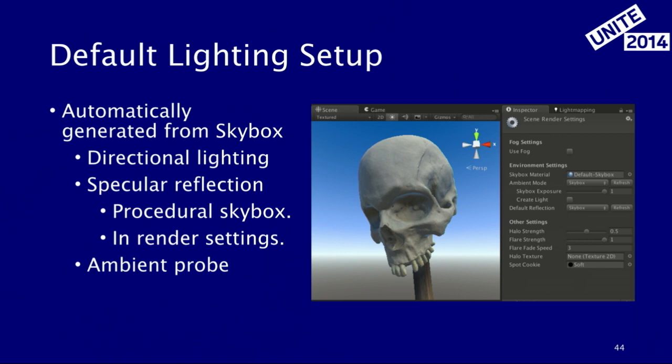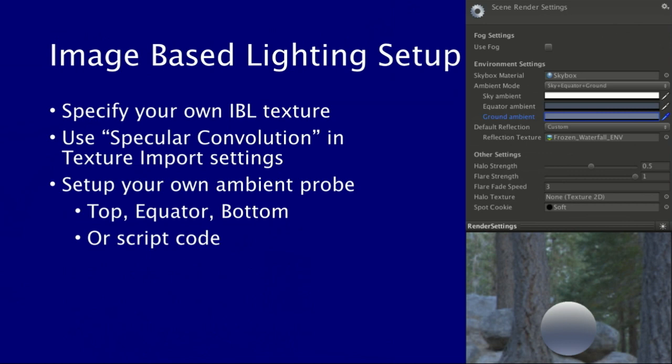We also have an ambient probe, which is basically like a single light probe to pick up the diffuse contribution. For the image-based lighting setup, you can easily specify your own IBL texture by importing any HDR or EXR texture and applying that. It uses specular convolution, and you can also add that in the texture import settings and set up your own ambient probe — with top, equator, and bottom that will give you these adjustments necessary to the ambient probes.